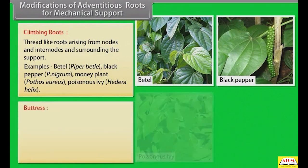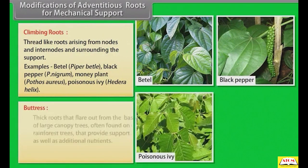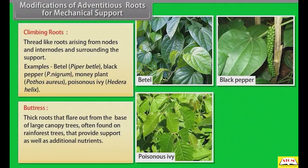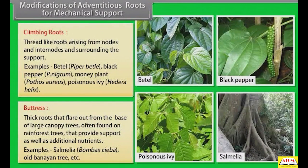Buttress roots are thick roots that flare out from the base of large canopy trees, often found on rainforest trees, providing support as well as additional nutrients. Examples: Salmalia, old banyan tree, etc.